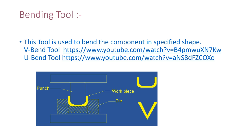The bending tool is used to bend a component into a specified shape, such as V-bend or U-bend. By using the punch and die combination, you can make U-shaped and V-shaped components through plastic deformation only — no cutting occurs in bending press tool operations.